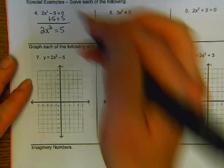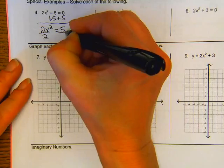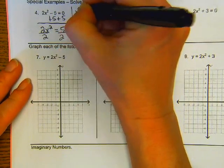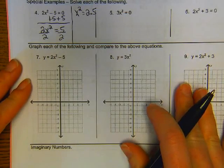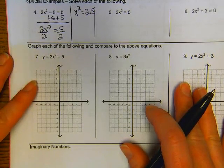We get 2x² equals five. Now do what? Good. We get x² equals 2.5.